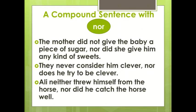A compound sentence with NOR is used when the first sentence is negative. We must pay attention here to the difference between the first negative sentence and the second with NOR, in which we have to put an auxiliary before the subject. The mother did not give the baby a piece of sugar, nor did she give him any kind of sweets. They never consider him clever, nor does he try to be clever.